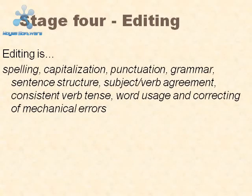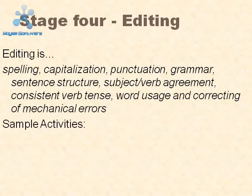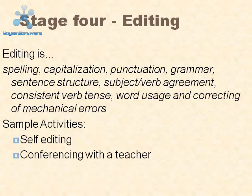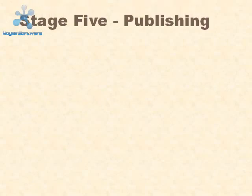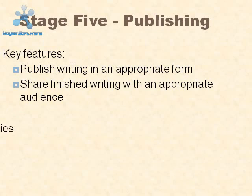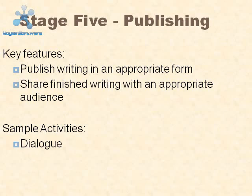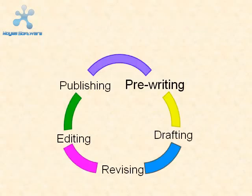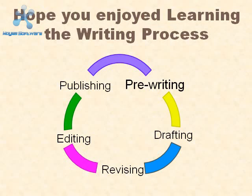Stage four — editing: editing involves spelling, capitalization, punctuation, grammar, sentence structure, subject-verb agreement, consistent verb tense, word usage, and correcting mechanical errors. Sample activities include self-editing and conferencing with a teacher. Stage five — publishing: publish writing in an appropriate form and share finished writing with an appropriate audience. Sample activities include writing dialogues and haikus. Hope you enjoyed learning the writing process. Thank you.